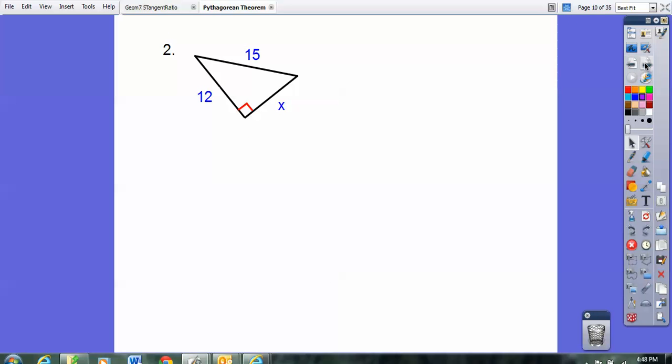Here's another one, right triangle. Now the hypotenuse is 15 this time, so it's going to be X squared plus 12 squared equals 15 squared. So 144 is 12 squared, 225 is 15 squared.